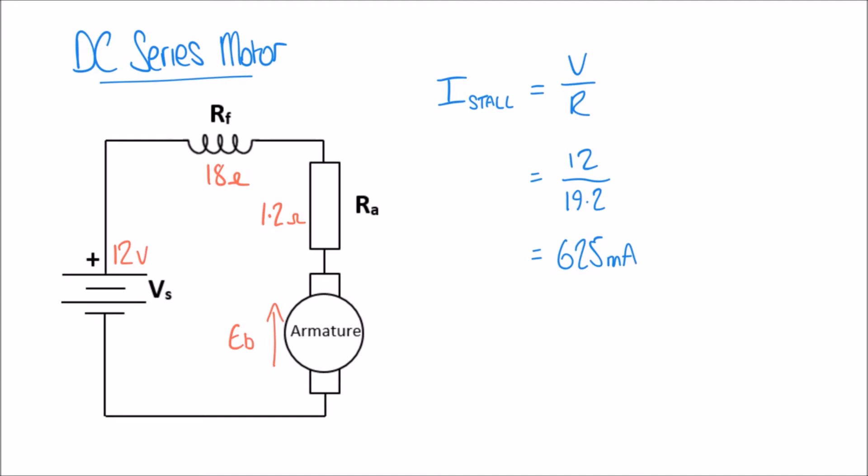Now let's allow the motor to run up to full speed. As the armature speed increases, EB also increases, opposing the supply voltage and reducing the current below the stall current. Running freely with no load attached, the current reduces to just 100 milliamps. We call this the no-load current, INL.